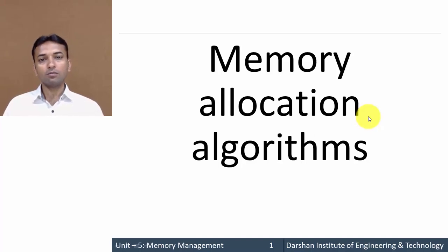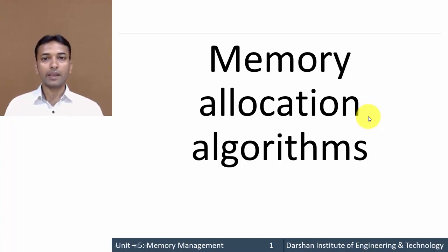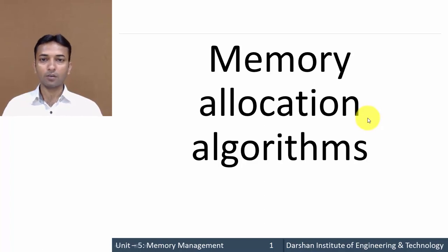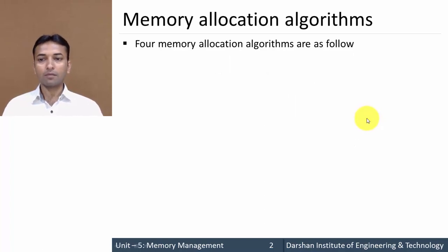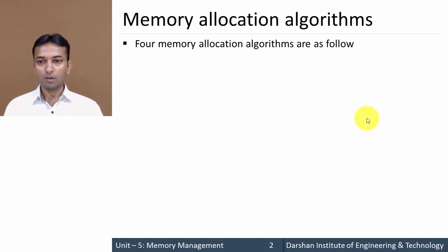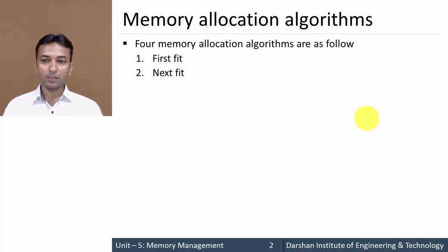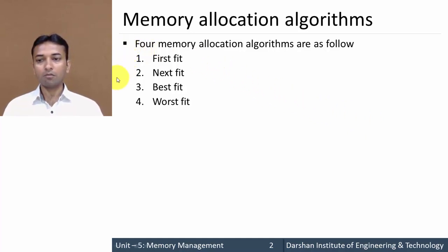Hello everyone. In this video we will learn about Memory Allocation Algorithms — which are the different algorithms that can be used to allocate memory to any process. There are mainly 4 different types of algorithms: First Fit, Next Fit, Best Fit, and Worst Fit. Let us see each and every algorithm one by one.